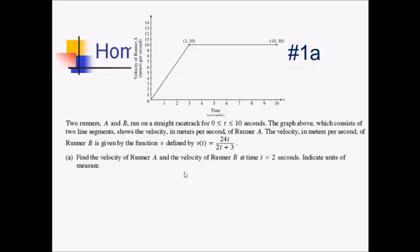For number eight, we've got two runners, A and B, running on a straight racetrack from zero to ten seconds. We have a graph representing the velocity of runner A, and we have a function representing the velocity of runner B.